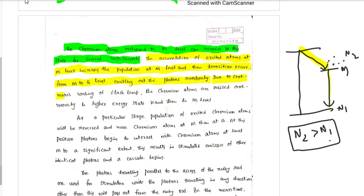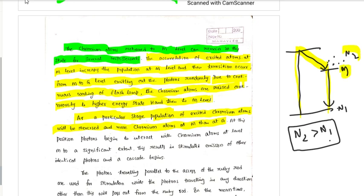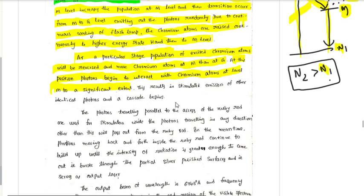Due to continuous working of the flash lamp, the chromium atoms rise continuously to the higher energy state H and then to the metastable level M. A population of excited chromium atoms builds up, with more chromium atoms at M than at Z. At this point, photons begin to interact with chromium atoms at level M to a significant extent, and this results in stimulated emission of other identical photons, and the cascade process begins.